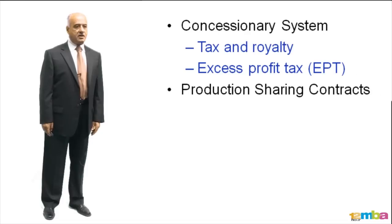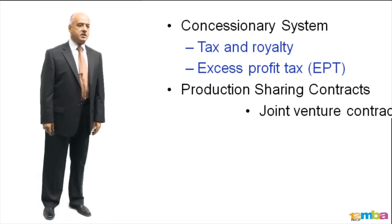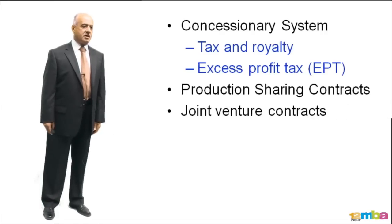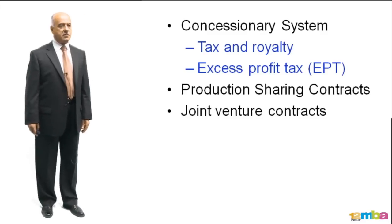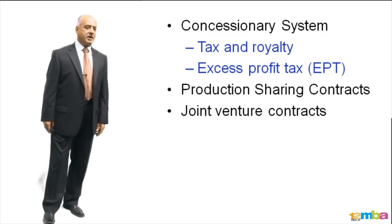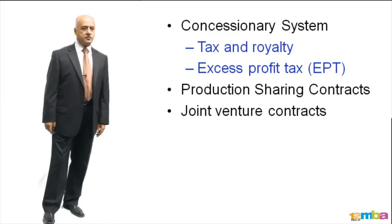Then we have the production-sharing contracts, which is the subject in this course that we will emphasize on. Then we have joint venture contracts. Joint venture contracts are straightforward contracts where there is more than one partner, and each partner has a proportionate share of risk and a proportionate share of reward.